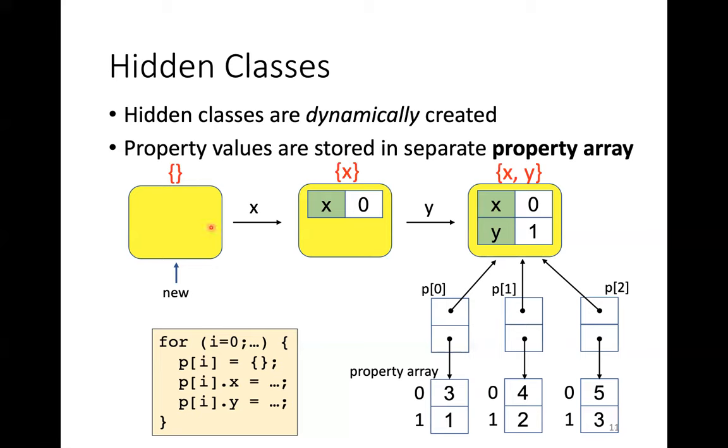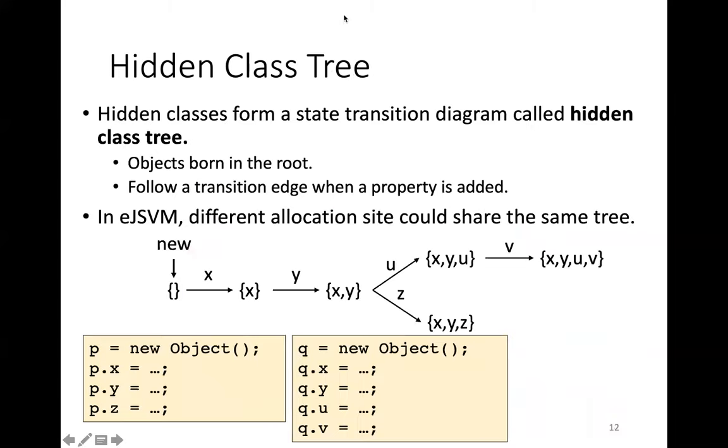In the rest of this talk, I will use these abbreviations for hidden classes. Hidden classes form a state transition diagram called the hidden class tree, which are no sharing. Objects are born in the root state of the tree. And when a property is added, an object follows a transition edge to find the next state. In EJSVM, different allocation sites share the same tree if the constructor functions are the same. For example, in this program, P and Q share the same tree.